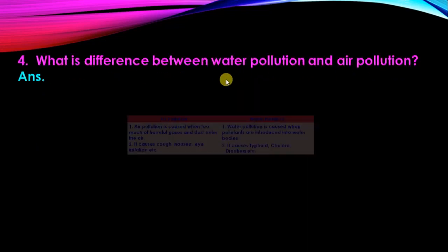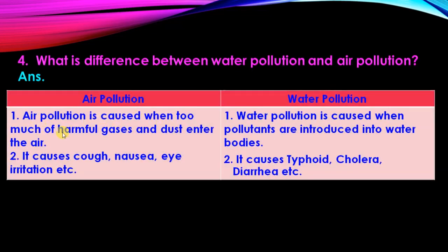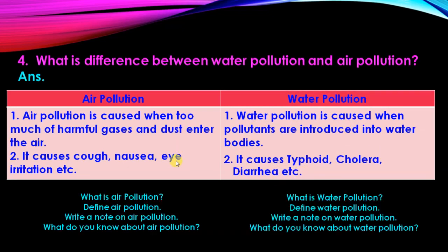What is the difference between water pollution and air pollution? Air pollution is caused when too much of harmful gases and dust enter the air — it causes cough, nausea, eye irritation, etc. Water pollution is caused when pollutants are introduced into water bodies — it causes typhoid, cholera, diarrhea, etc. If you find any question about air pollution or water pollution individually, write only the relevant definition and effects.